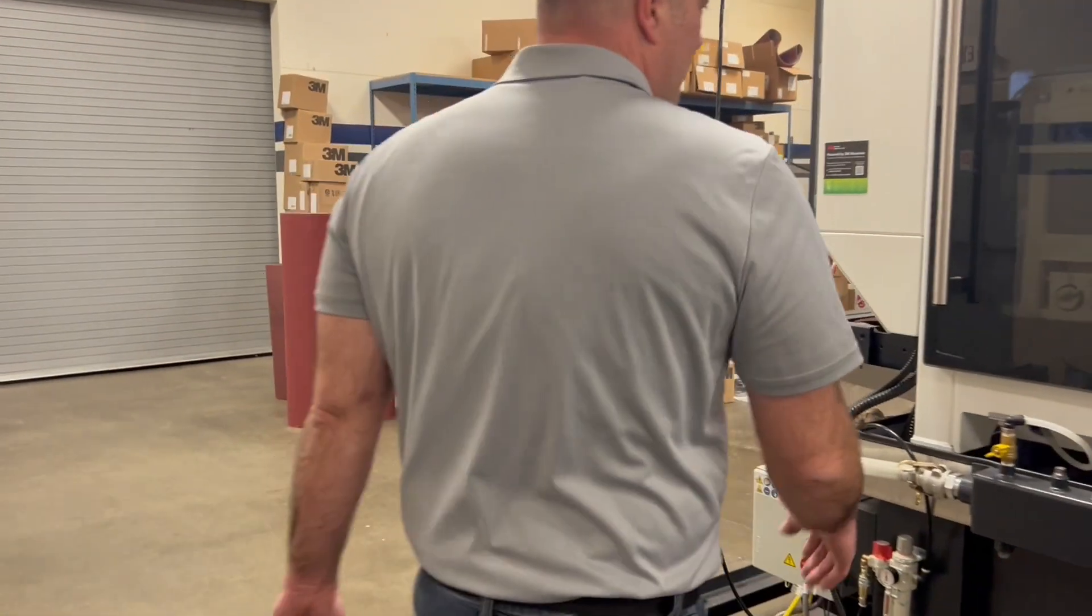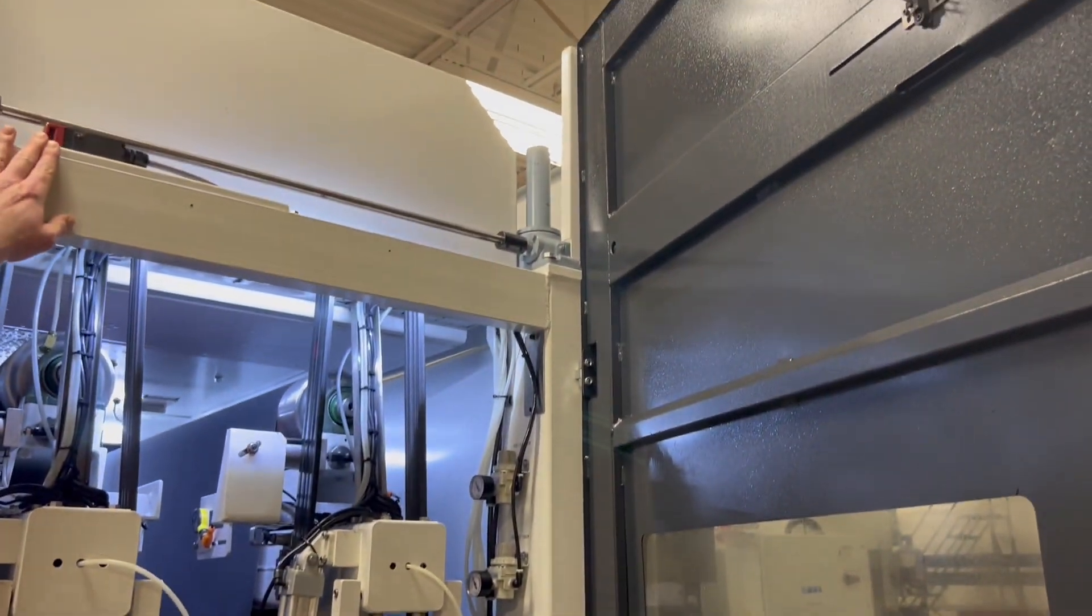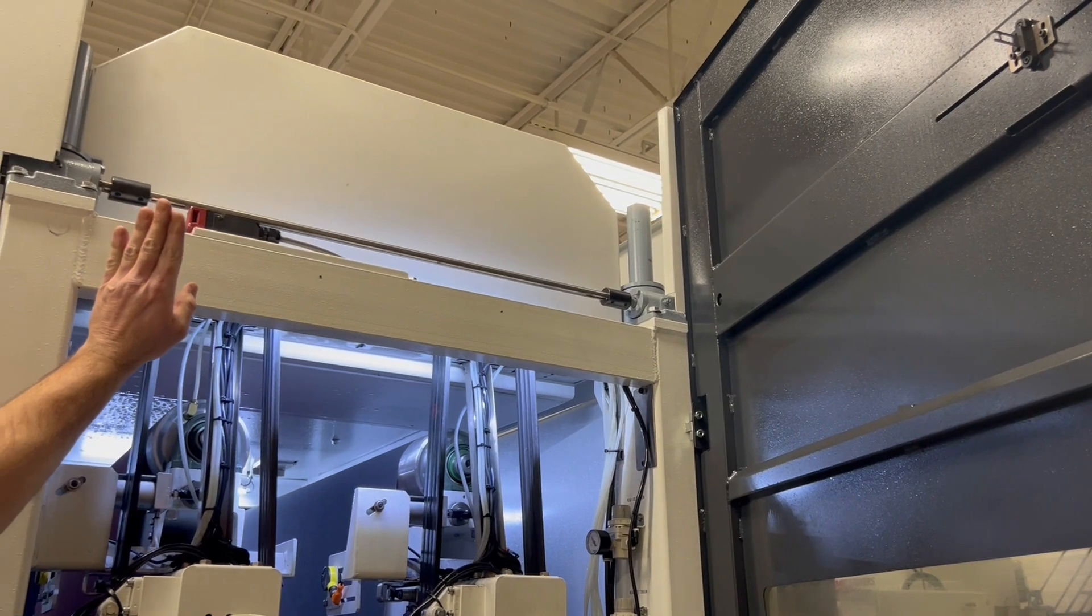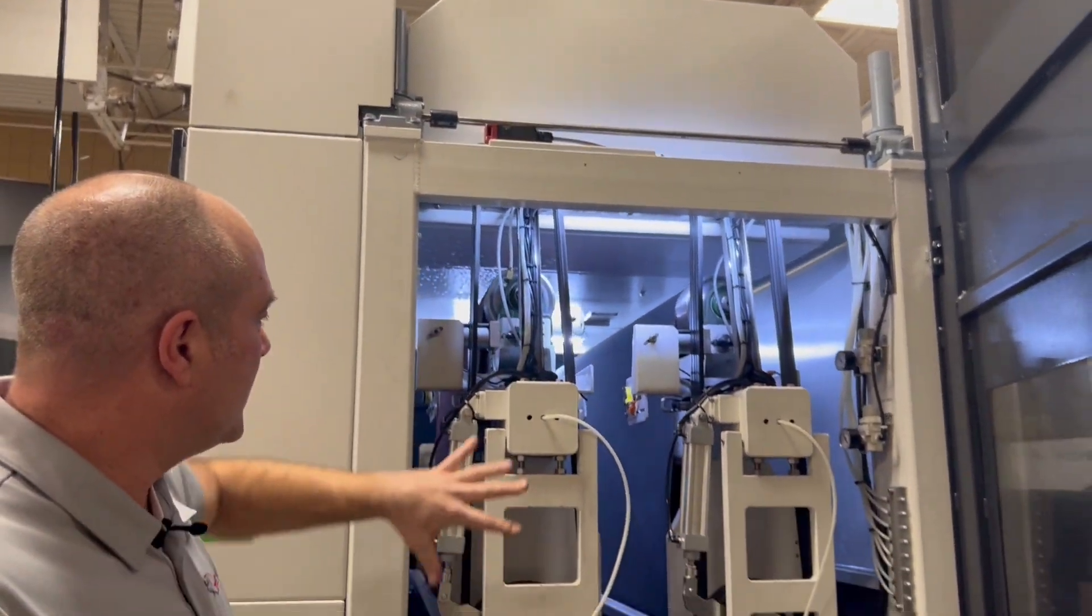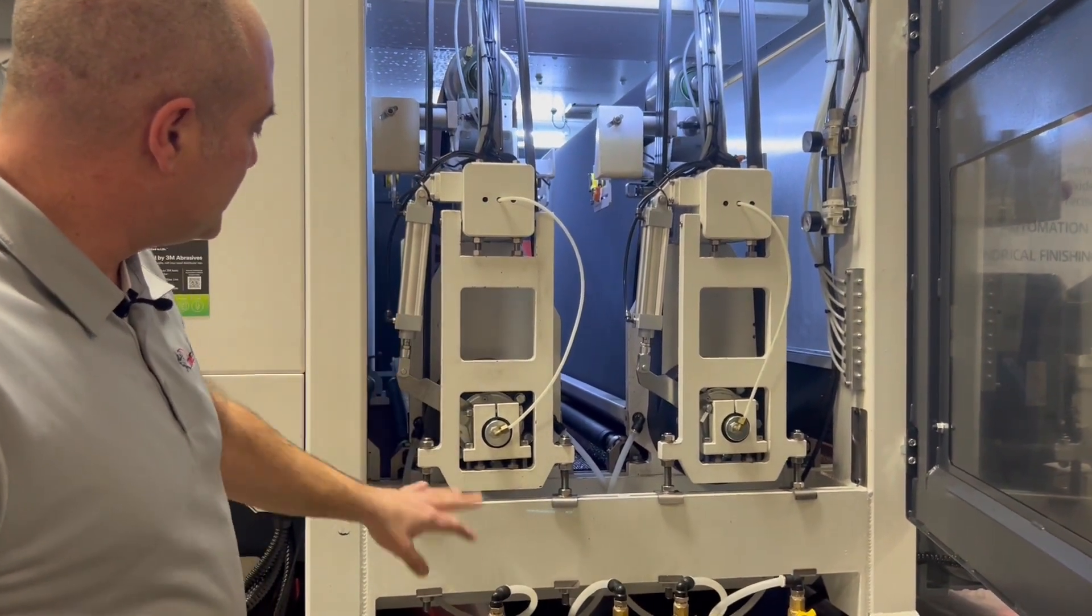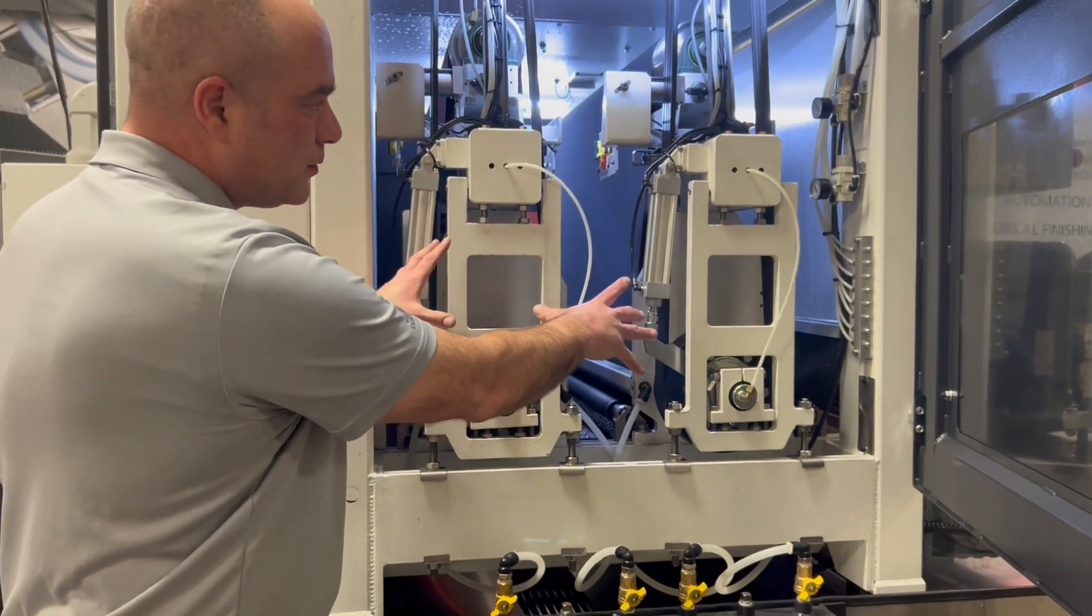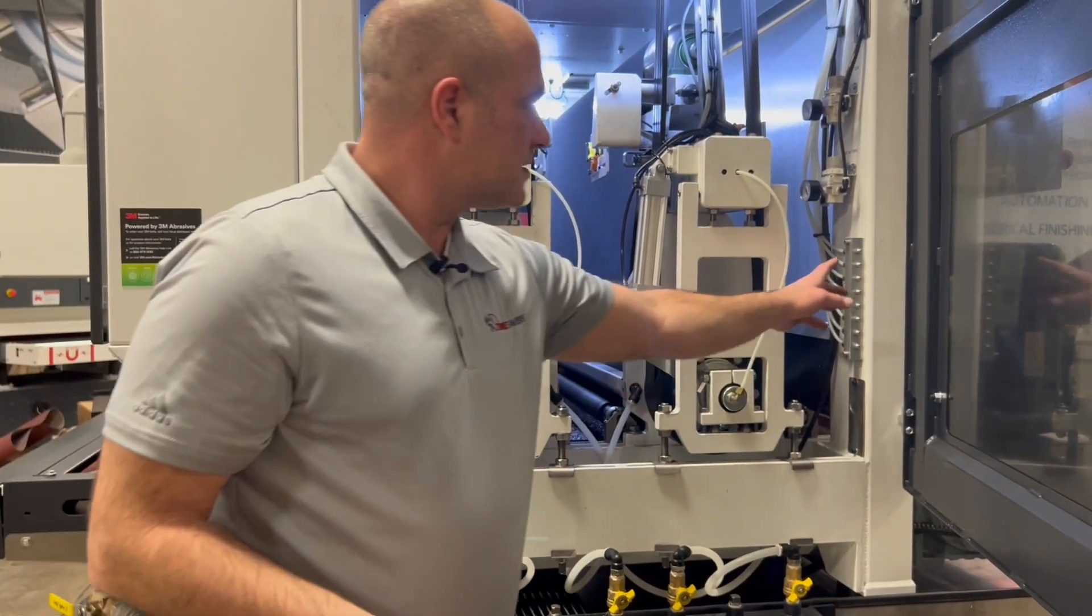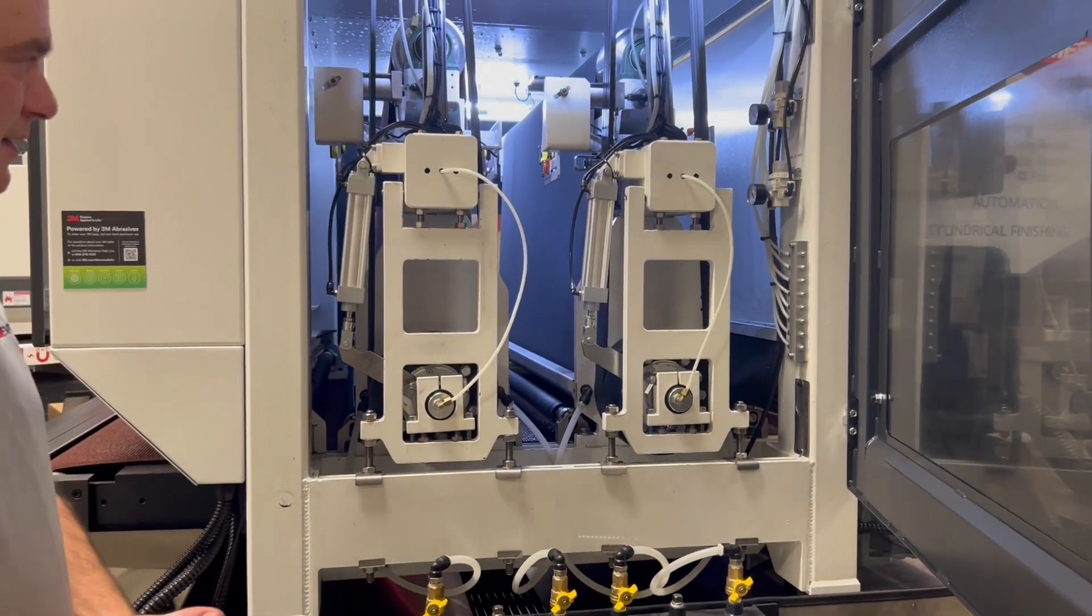As we move to the back of the machine here, pretty simple. This door is interlocked, so if the machine is running and the door's open, the machine will shut down. But as you can see here we do have our tracking, our pop-up cylinders, our eccentrics for the drums. Everything is very easily accessible here, also along with our grease system here for the high speed bearings.